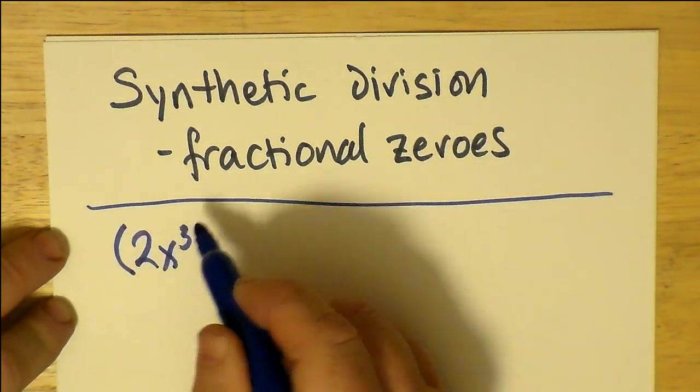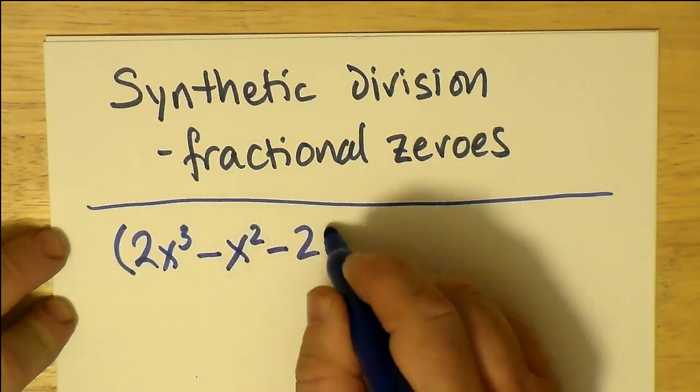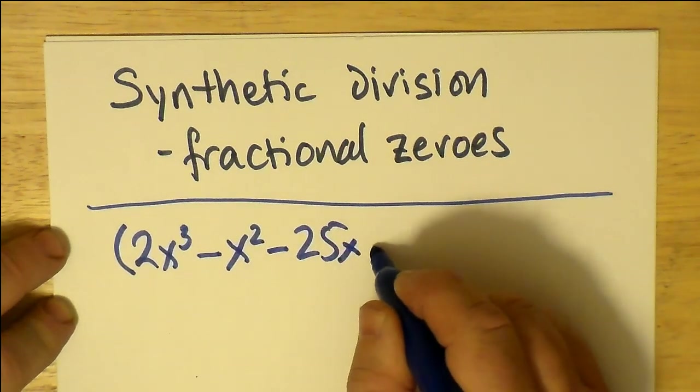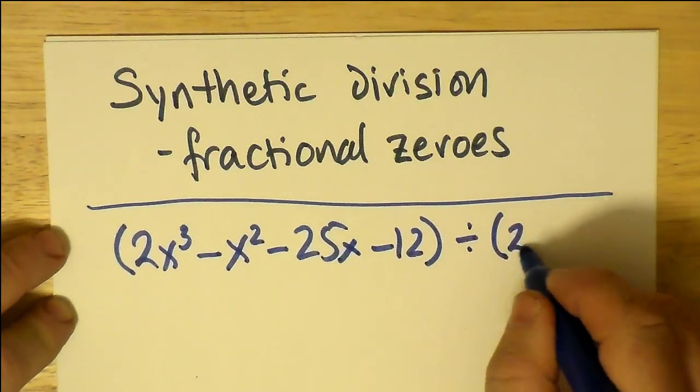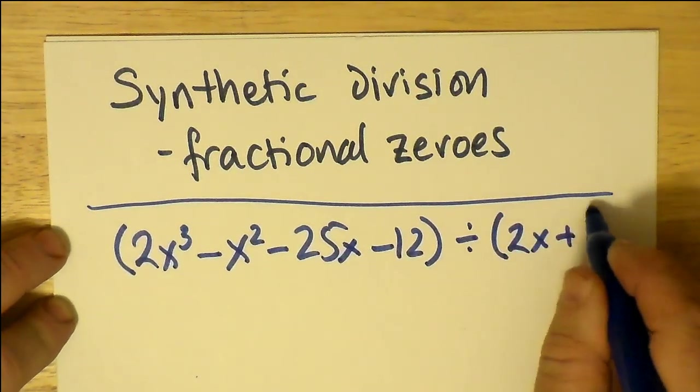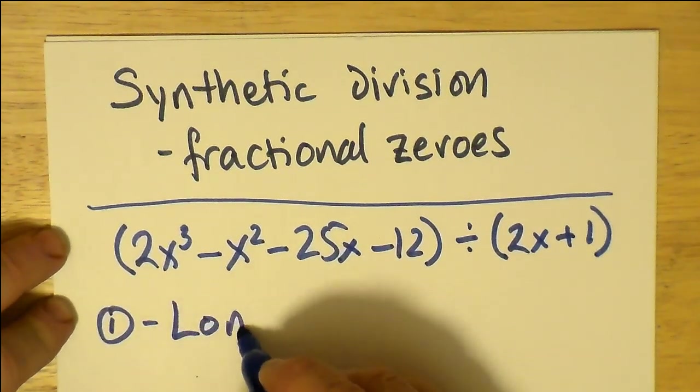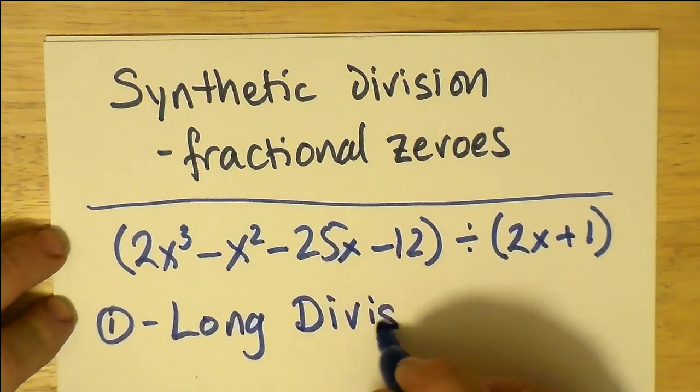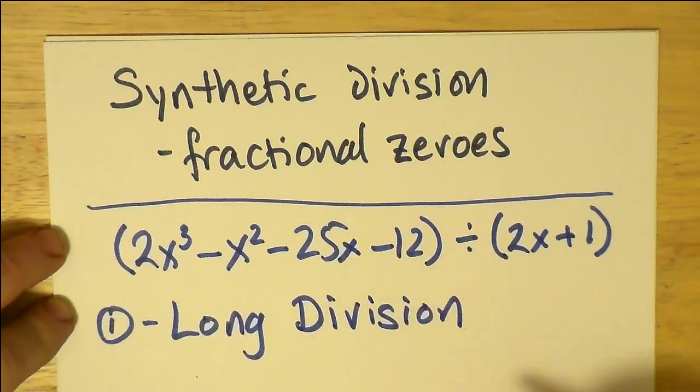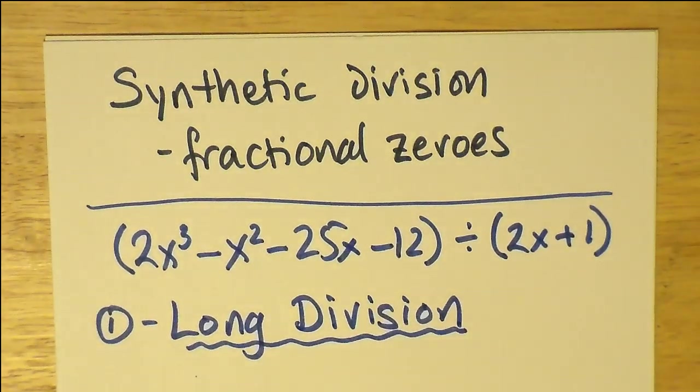First, let's take a sample problem: 2x³ - x² - 25x - 12, and we're going to divide that by the binomial 2x + 1. As you can see, that's going to have a fractional zero, -1/2 to be precise, and we're going to compare two methods. We're going to compare long division against synthetic division, so we're going to do long division first.